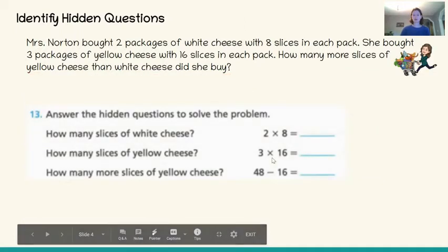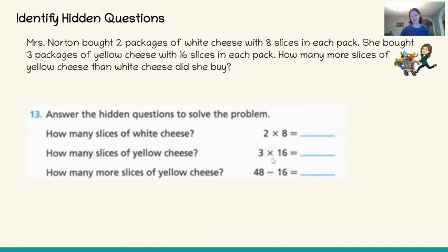Now that I've figured out the hidden questions, I need to answer them to help solve the problem. How many slices of white cheese? Well, we know Mrs. Norton bought two packages of white cheese with eight slices in each pack. Two times eight equals sixteen. How many slices of yellow cheese? This is our other hidden question, because we weren't exactly told — we have to figure it out from the information we're given. We're told Mrs. Norton bought three packages of yellow cheese with sixteen slices in each pack. Three times sixteen equals forty-eight.